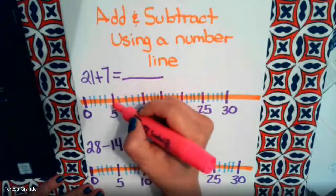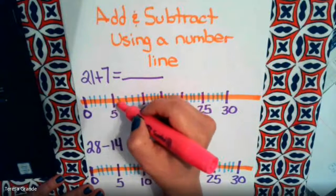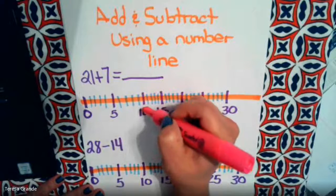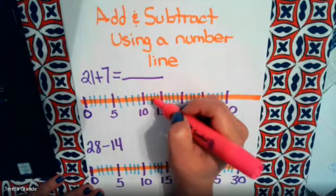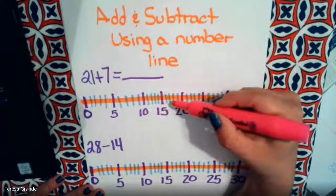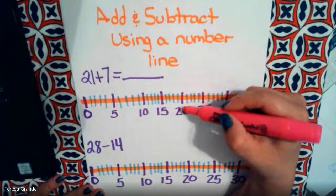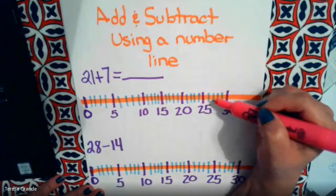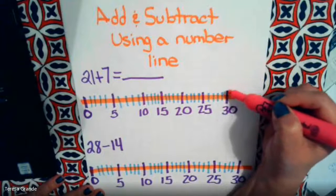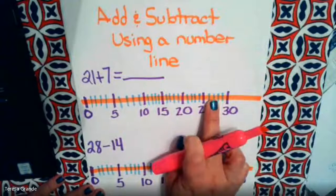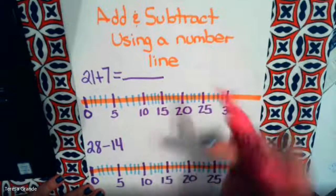So this is 1, 2, 3, 4, 5, 6, 7, 8, 9, 10, 11, 12, 13, 14, 15, 16, 17, 18, 19, 20, 21, 22, 23, 24, 25, 26, 27, 28, 29, 30. So every little blue line is one more. When we look at the purple lines, we're counting by fives.